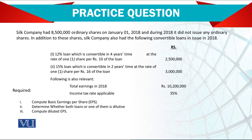Note this key point: when we talk about conversion, there is no specific time frame consideration. We assume that conversion happens at the beginning of the year, even though the terms say conversion must happen within 4 years. Since the shares have not yet been issued, for diluted earnings per share we assume they were converted right at the start.